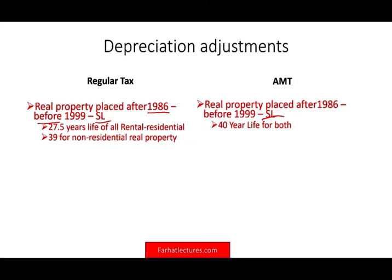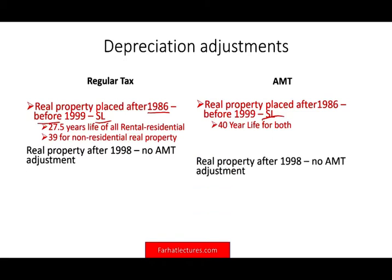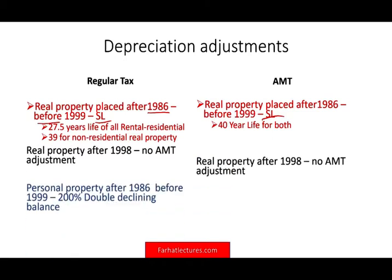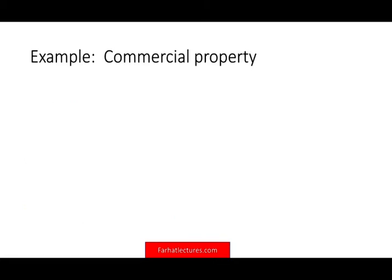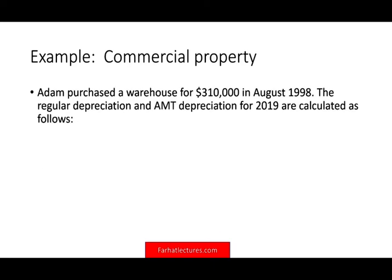Because when you spread the asset over 40 years instead of 27.5, your deduction goes down and the government wants to charge you more taxes. Any real property placed in service after 1998 has no AMT adjustment. For commercial property, the difference between 39 years regular and 40 years AMT is only one year — not significant. Let's assume Adam purchased a warehouse for $310,000 in August 1998. Regular depreciation for 2019 is $7,948, and the AMT uses a 40-year life — the difference is minimal.